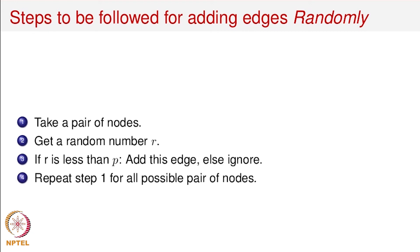We'll keep repeating steps 1 to 3 for all possible pairs of nodes. By the end, after we have processed all the pairs, we would have added a certain number of edges to the network. This is the whole idea that we are going to follow for the implementation in the next video. We will also see the degree distribution that this kind of network follows.